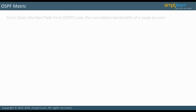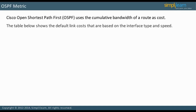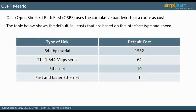Let us discuss the OSPF metric. The Cisco implementation of OSPF uses the cumulative bandwidth of a route as cost. By default, cost for a single router interface or link is calculated as 10 to the 8th power divided by the bandwidth on the interface. Therefore, default costs are based on the interface type and speed. Take a moment to study the default link costs in the table on the slide.